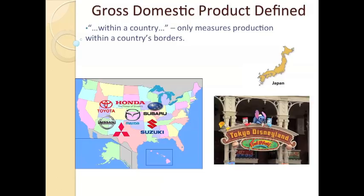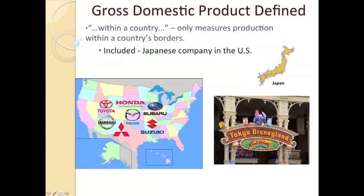GDP also only takes into account things that we sell here in the United States — it's gross, or total, domestic, meaning within our borders. So it only measures the production of products that we sell here in the United States, not companies that are American companies overseas. For instance, if I go to Tokyo Disneyland, the stuff I buy — the tickets, drinks, toys — are going to count towards Japan's GDP, not towards the United States' GDP. It's employing Japanese workers, not American workers, and adding towards that nation's GDP. On the other hand, a Japanese company in the United States selling products such as Mazda, Nissan, Toyota — some of these Japanese car dealerships would count towards the United States' GDP because they employ American workers and add towards our economy. Which, of course, by logic would then exclude an American company in Japan.